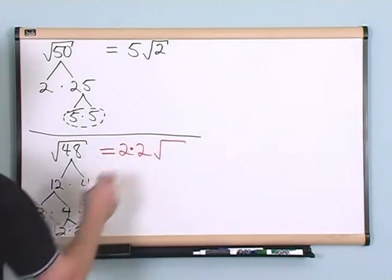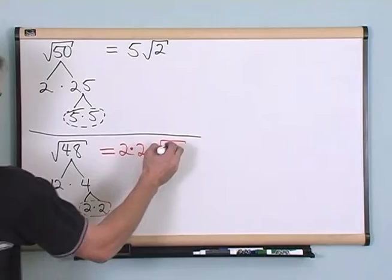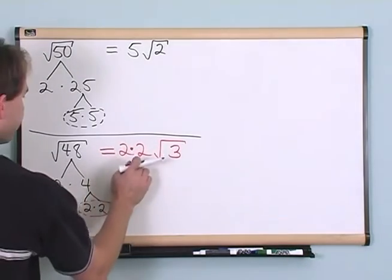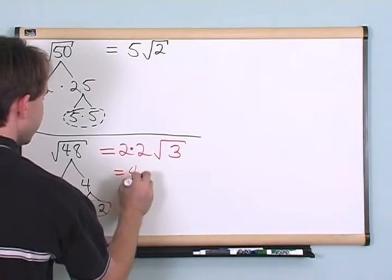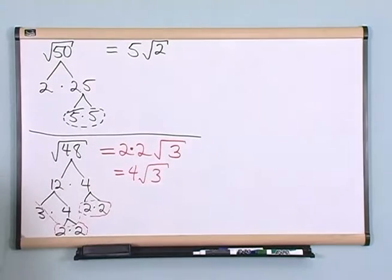And then underneath the radical, I've got my lonely 3, which nothing ever happened to it. 2 times 2 is just 4, and I just keep my 3, my square root of 3, and that's the answer, 4 times the square root of 3.